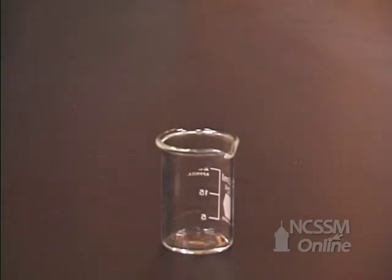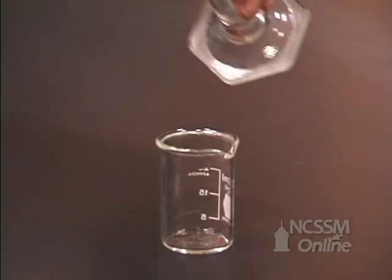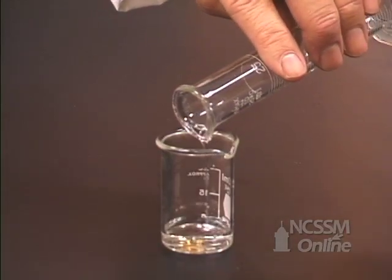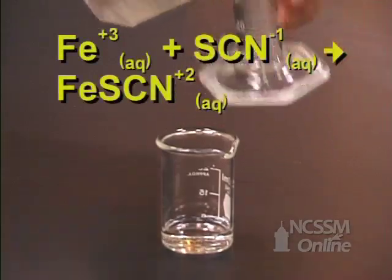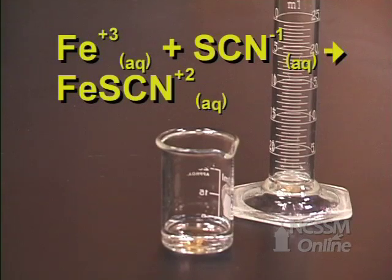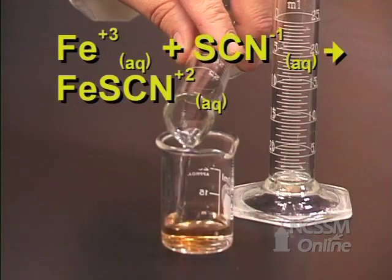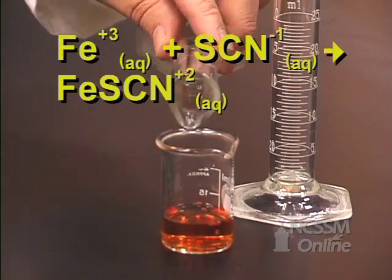After you have read the percent T of the standard solutions, you will prepare equilibrium mixtures of iron plus 3 and thiocyanate by pouring the iron plus 3 solution and the thiocyanate solution to a beaker.